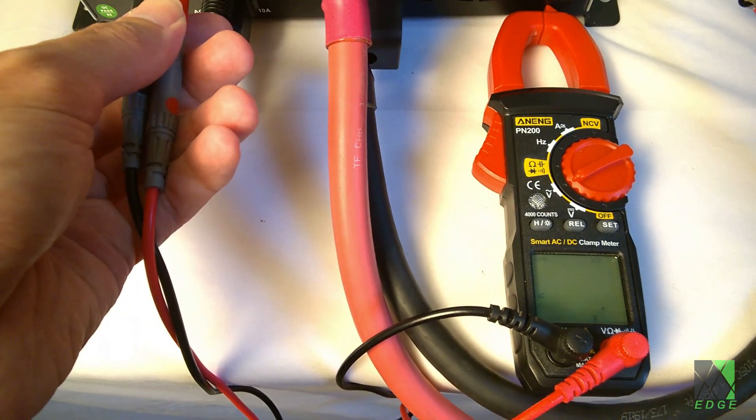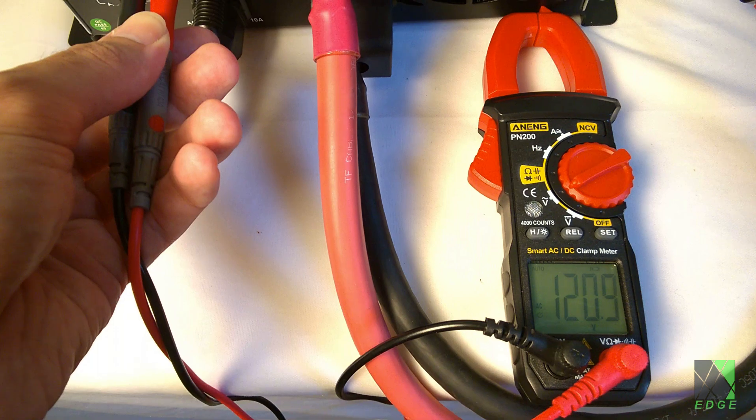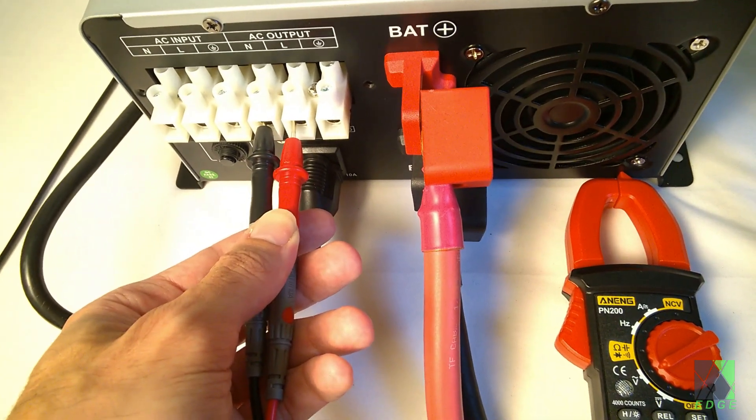You can also measure AC voltage by putting the meter into AC mode and putting the probes in the AC outlet. Use care and caution while doing this.